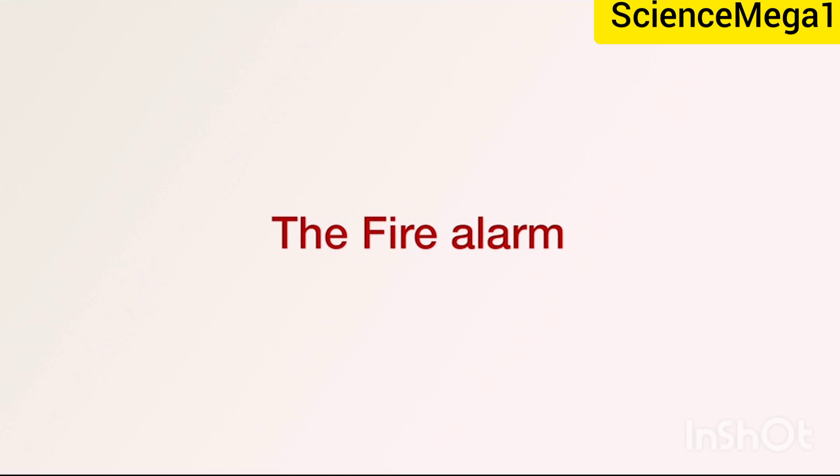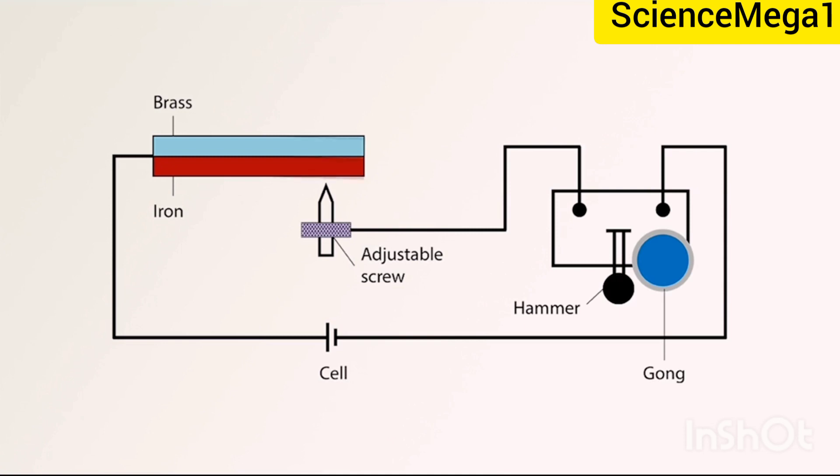Finally, I want us to take a look at the fire alarm. The bimetallic strip bends over when made sufficiently hot by a fire to make contact with a screw. This completes an electric circuit which rings a bell and an alarm.